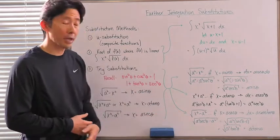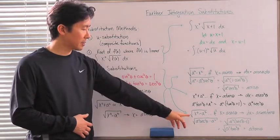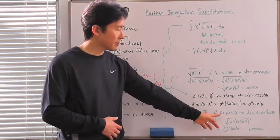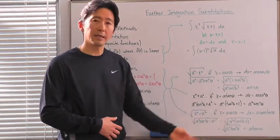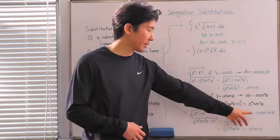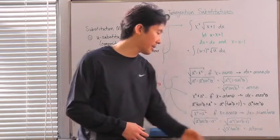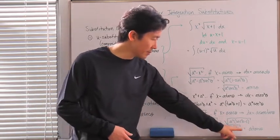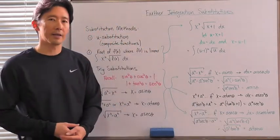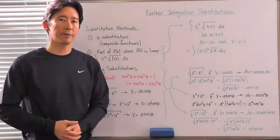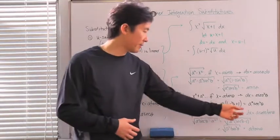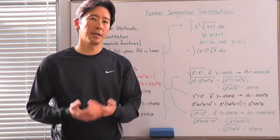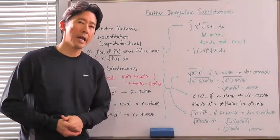The last case is the square root of x² minus a². Here we let x equal a secθ, so dx equals a secθ tanθ dθ. Substituting x into the radical, it simplifies to a tanθ. Again, if we have a ratio of dx and this particular radical, there will be a cancellation and hopefully we can integrate.